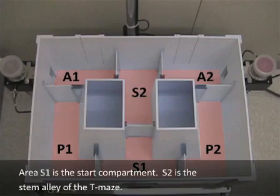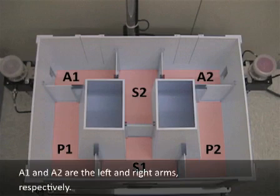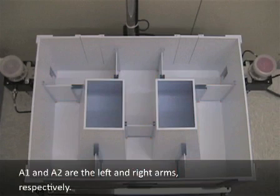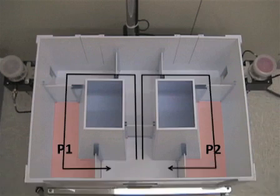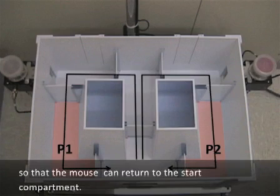Area S1 is the start compartment. S2 is the semi-area of the T-Maze. A1 and A2 are the left and right arms respectively. Areas P1 and P2 comprise their connecting passages from areas A1 or A2 to area S1 so that the mouse can return to the start compartment.